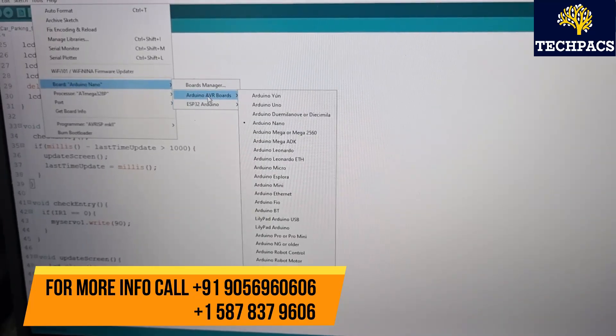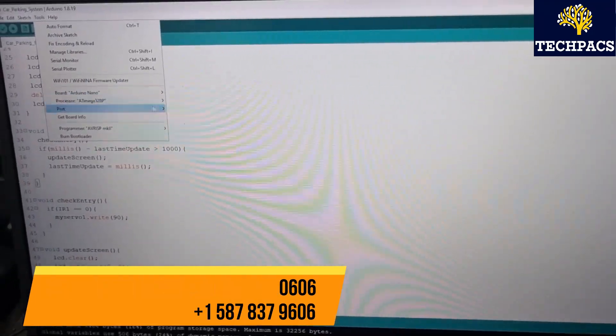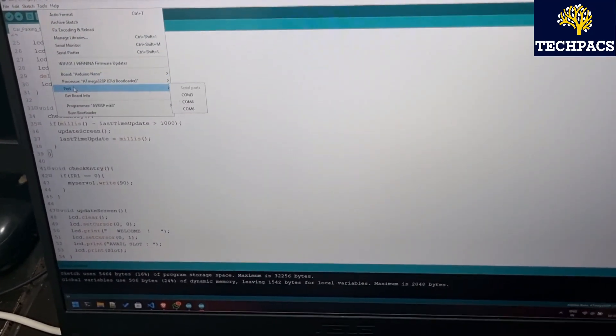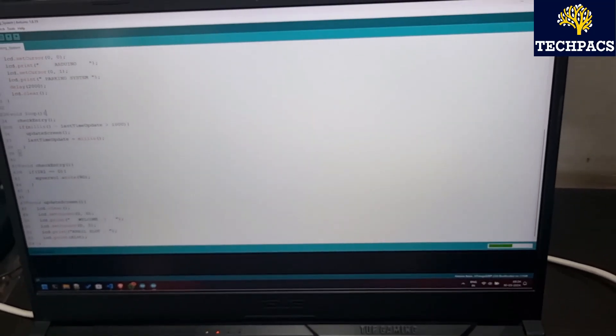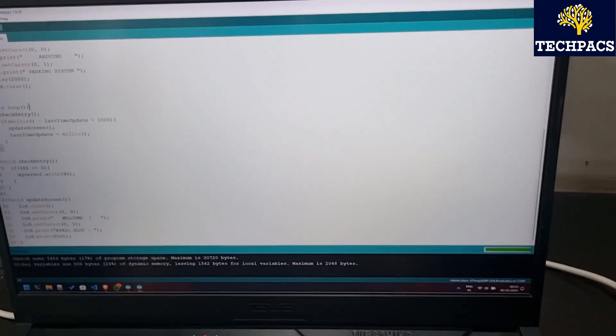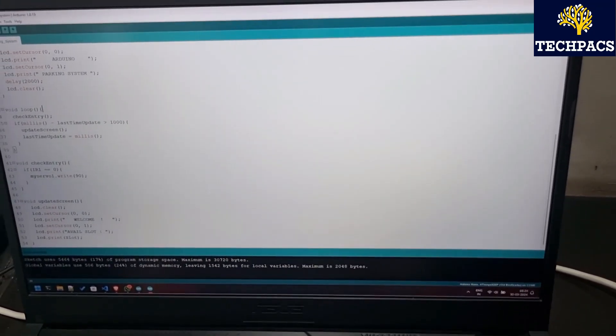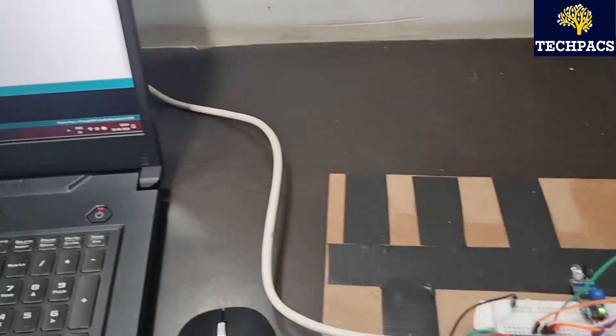So here we have already prepared a code and you can see that the code is being supplied to the Arduino Nano so that it may instruct the rest of the components and facilitate the project working.